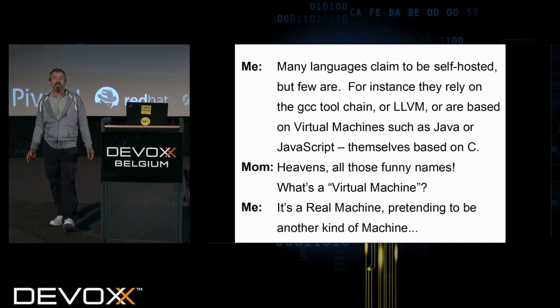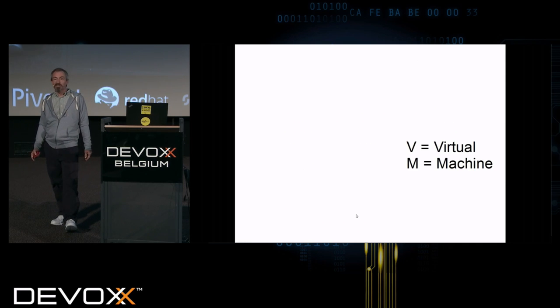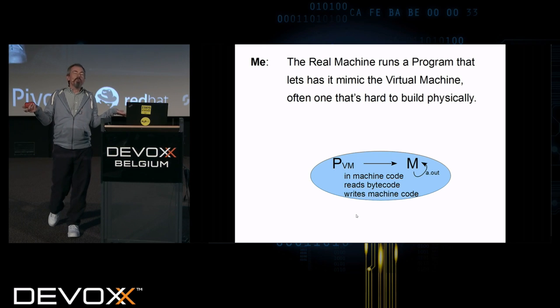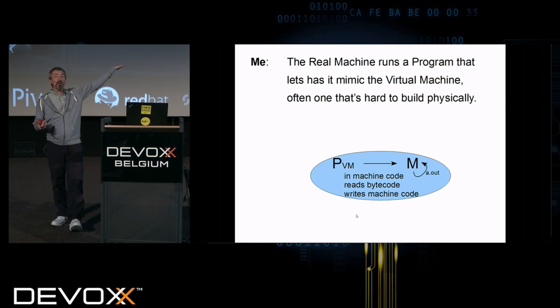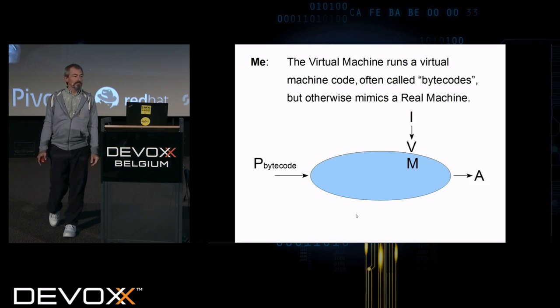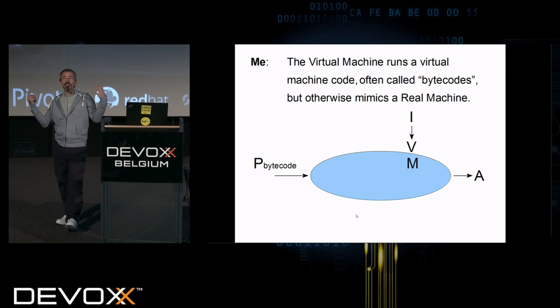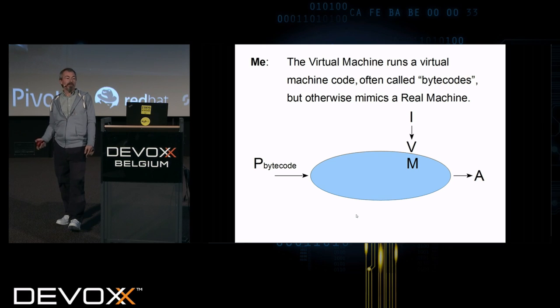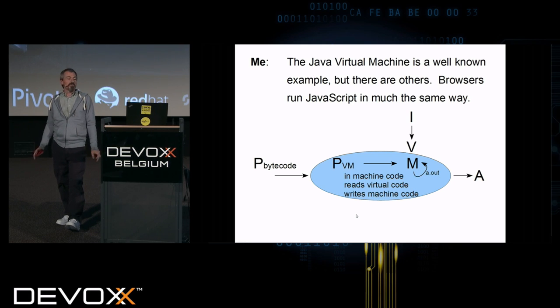Well, it's a real machine pretending to be another kind of machine. V for virtual. Virtual machine. The real machine runs a program that has it mimic the virtual machine. And the virtual machine is one that's just too hard to build physically. That's why we're doing it virtually. So here I have a program that's a virtual machine program. It's in machine code to run on the real machine. But it's going to read something that's not machine code, I'll call it bytecode here. The Java virtual machine is a well-known example, but there are others. Browsers run JavaScript in much the same way. Pascal, I think, has a P-code machine that's very similar.